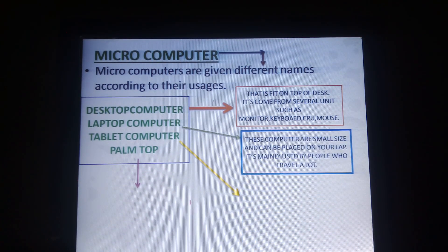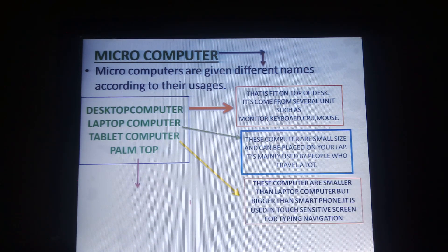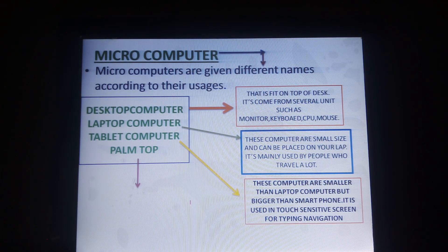Next is the laptop computer. These computers are small in size and can be placed on your lap. They are mainly used by people who travel a lot. Next is the tablet computer. These computers are smaller than the laptop but bigger than a smartphone, and use a touch-sensitive screen for typing and navigation.